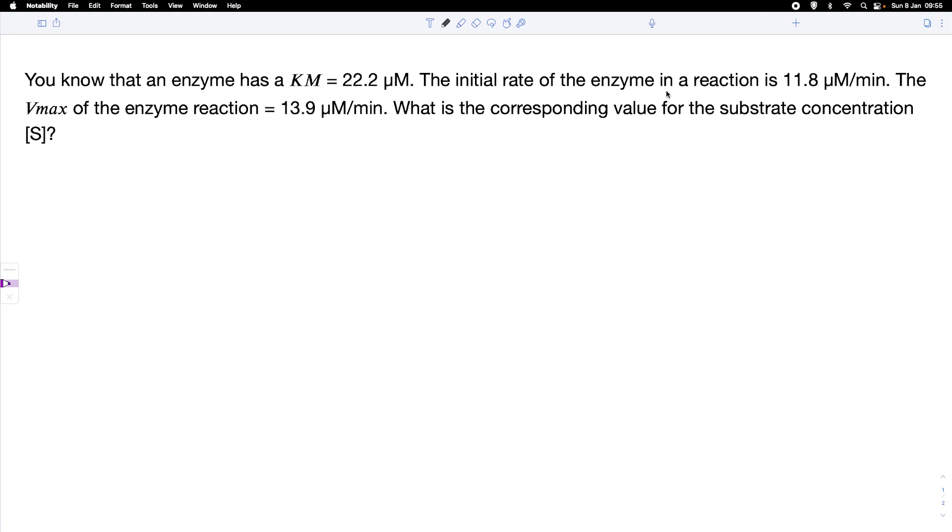We have an initial rate of the enzyme which is 11.8 micromolar per minute and we also have a Vmax of 13.9 micromolar per minute. So how can we do that?